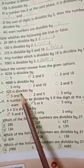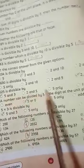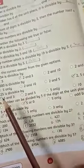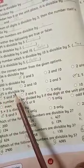525 is divisible by 5 and 3, 2 and 5, 5 only, 10. The correct option is option A, 5 and 3.